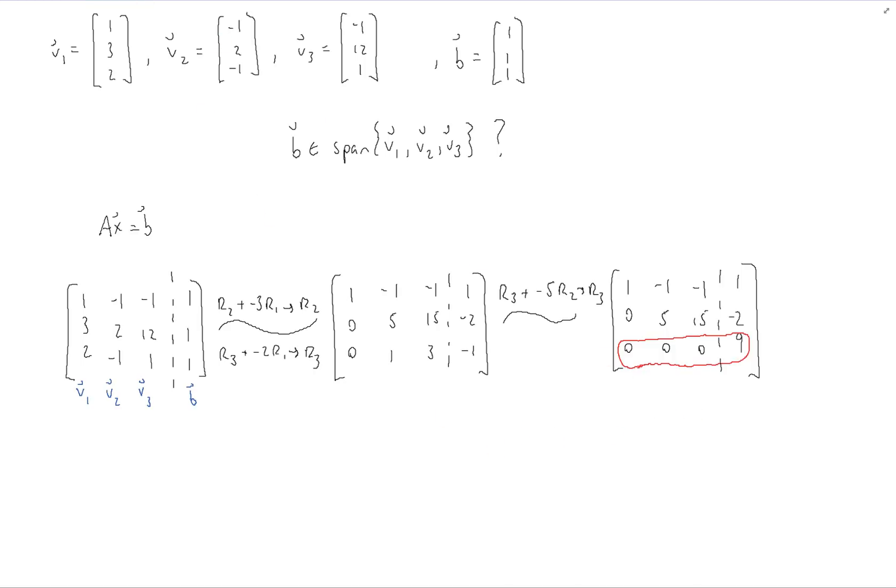And therefore, this equation is inconsistent. And that means that B is not in the span of the vectors V1, V2, and V3.